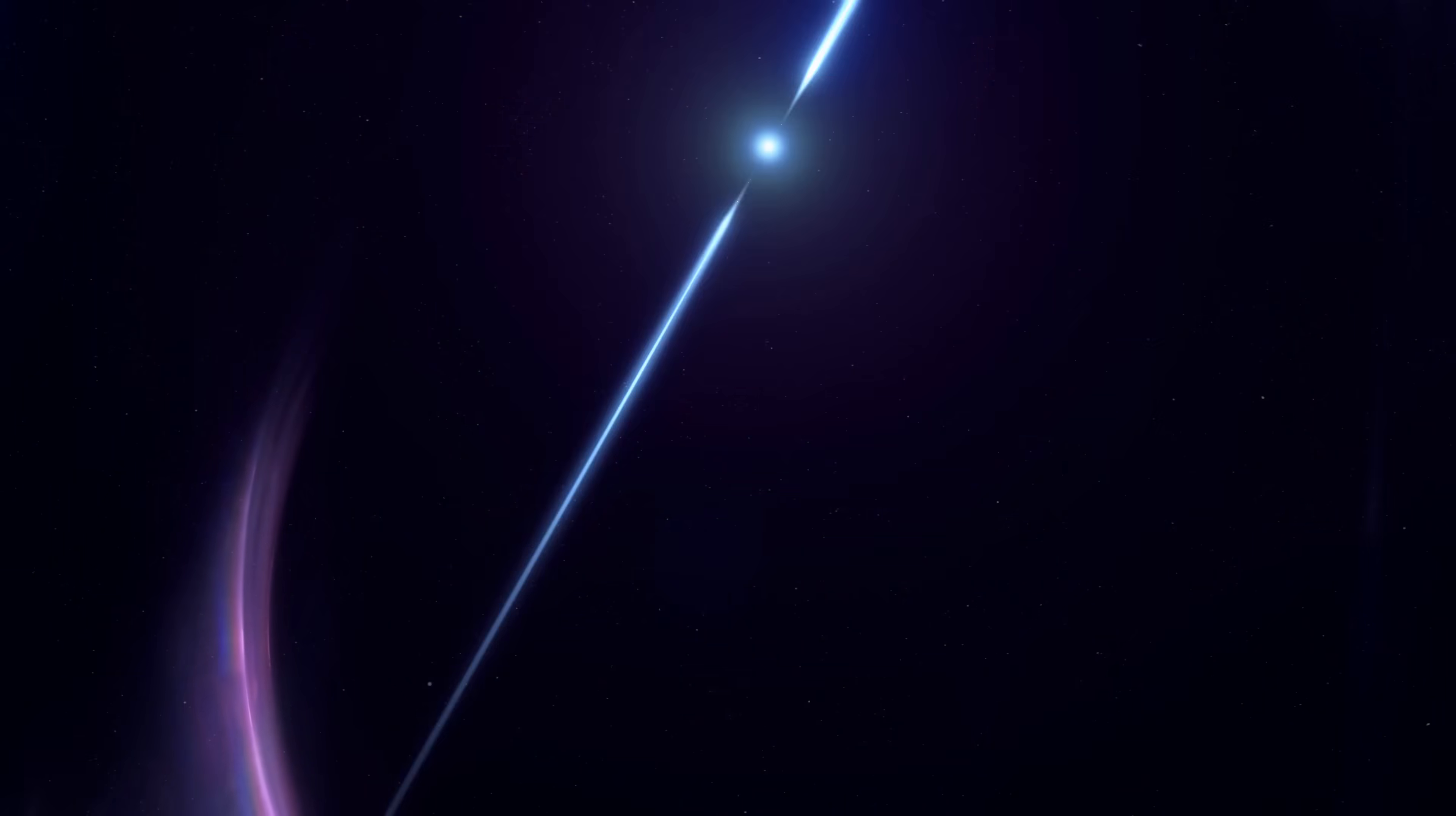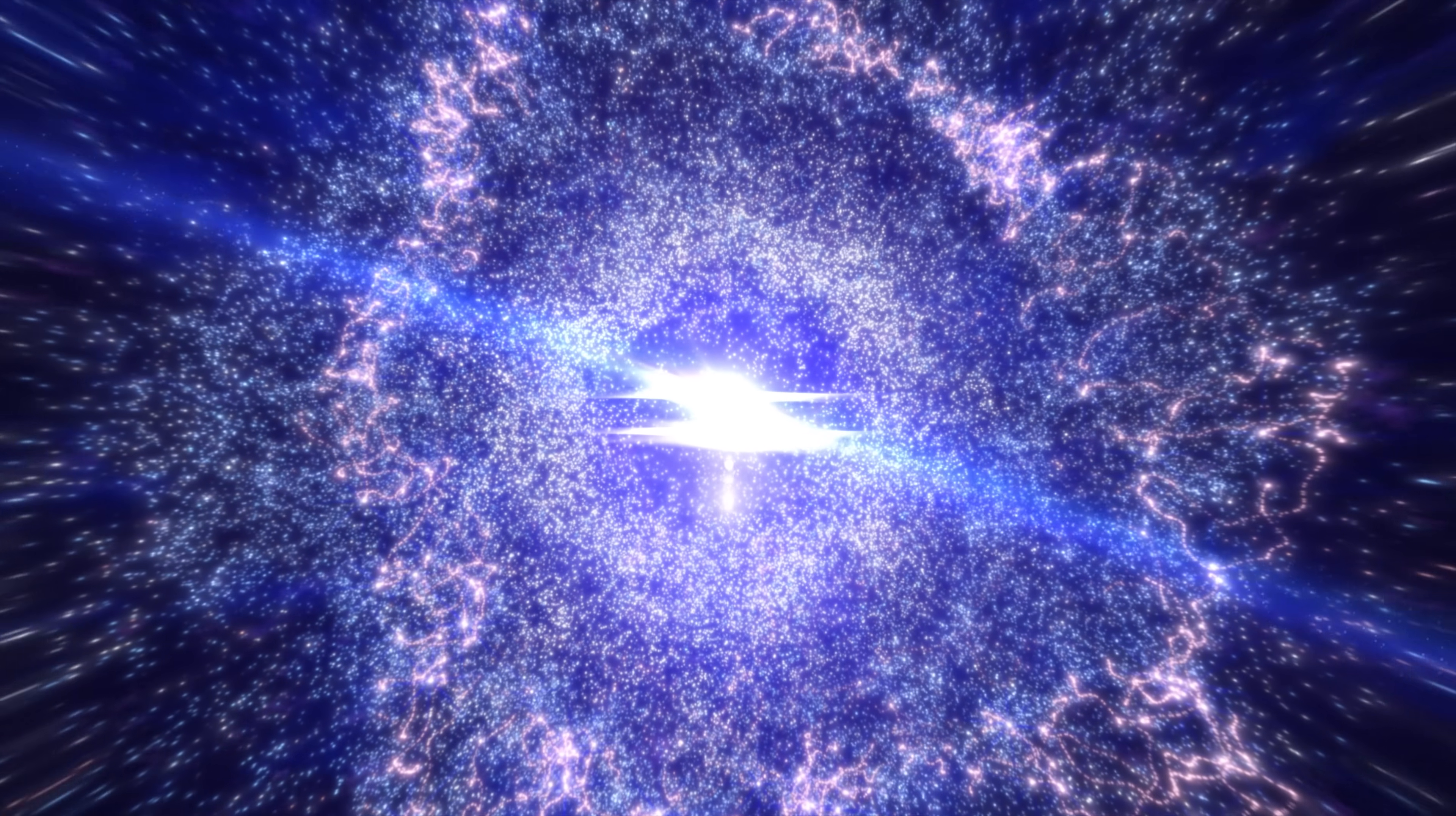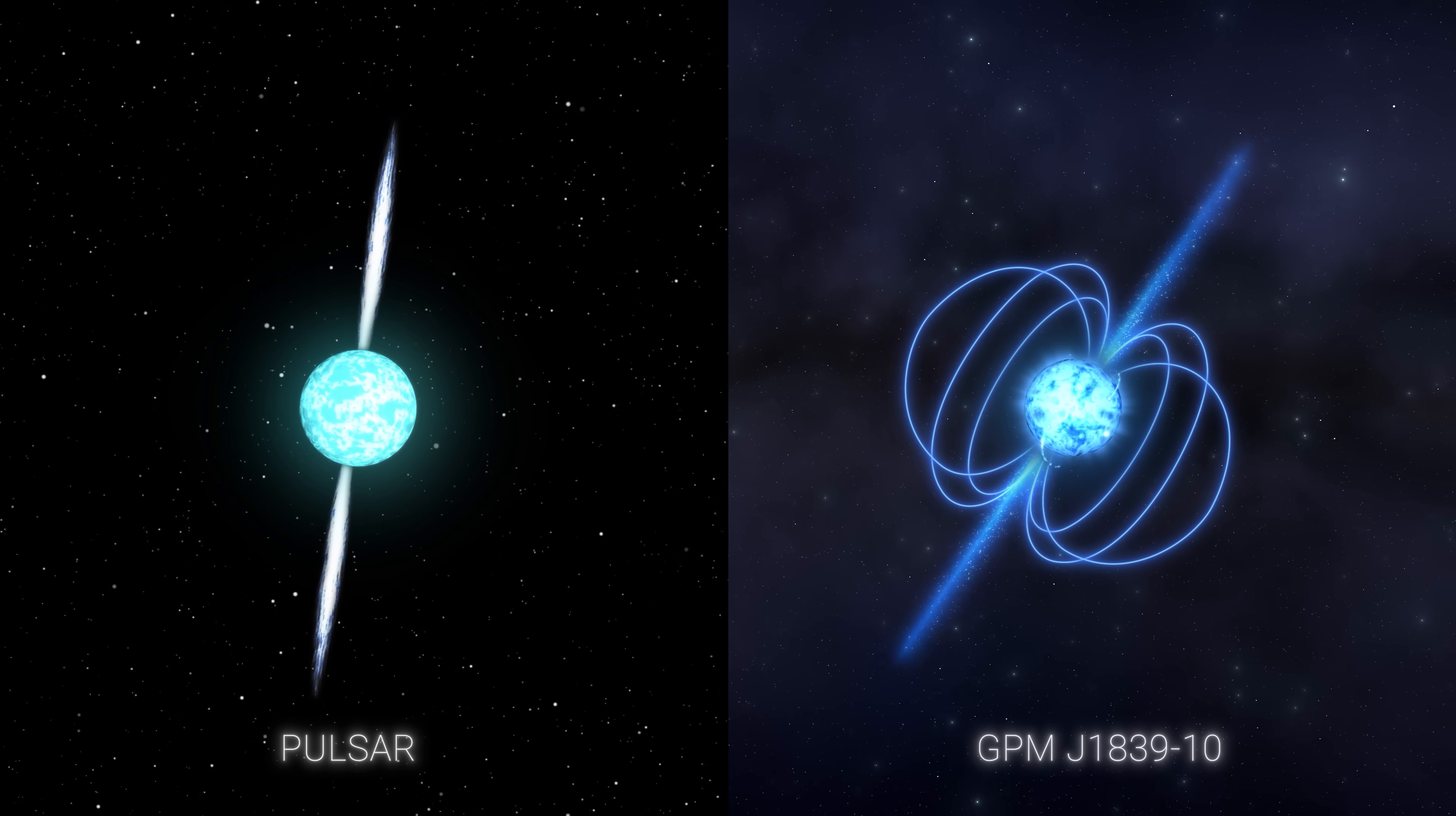Moreover, the longevity and permanence of the signal contradict what we know about pulsars. These celestial objects can slow down over time due to a loss of rotational energy, which would affect the timing of the signals they emit. Nevertheless, GPM J1839-10 has remained unchanged for more than three decades.